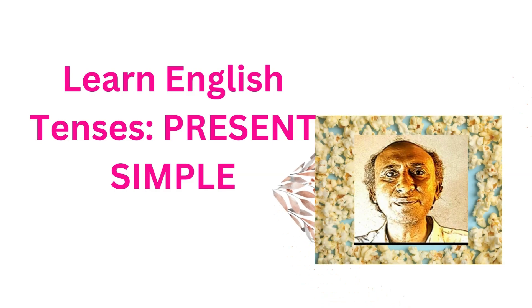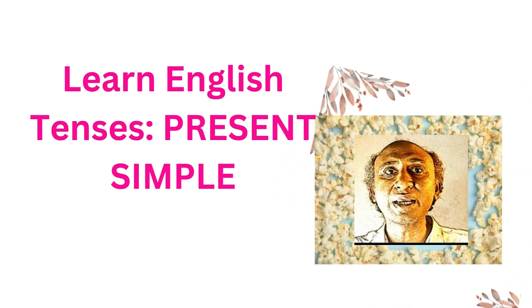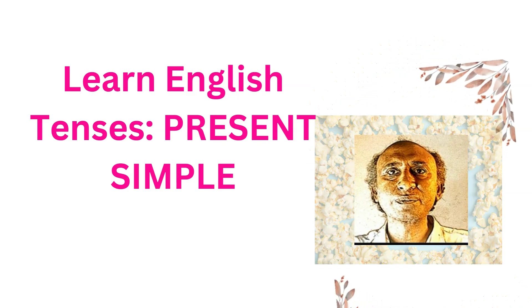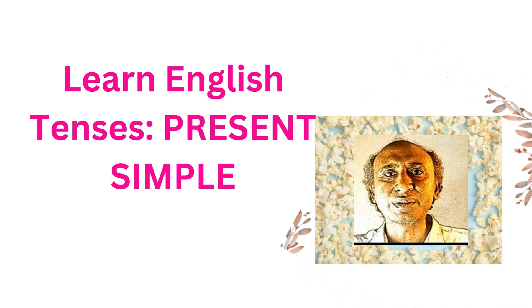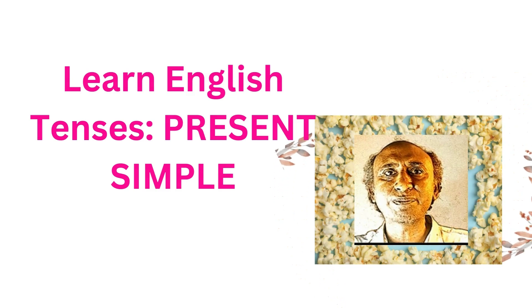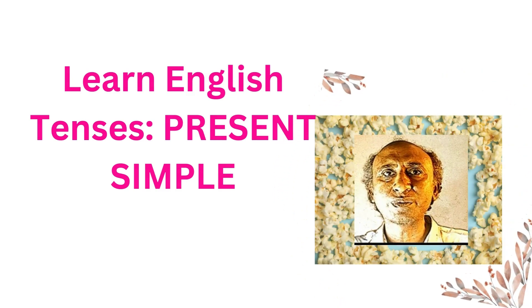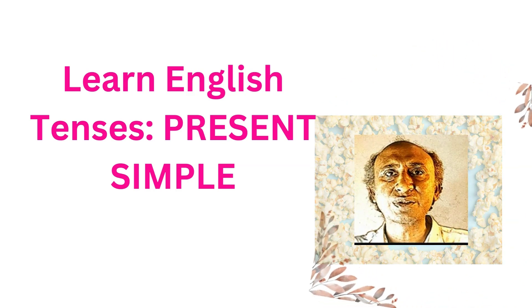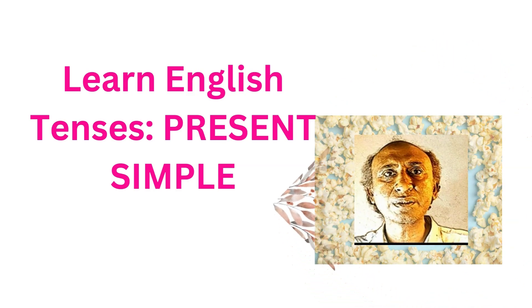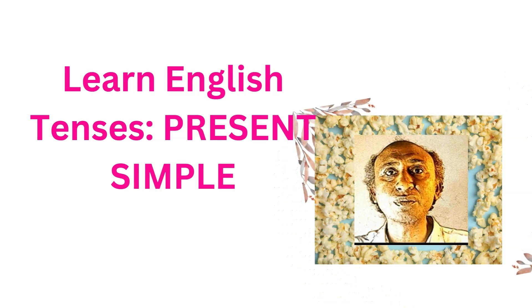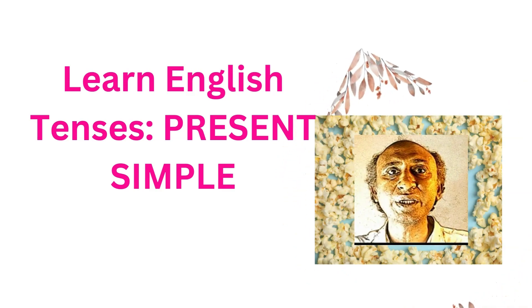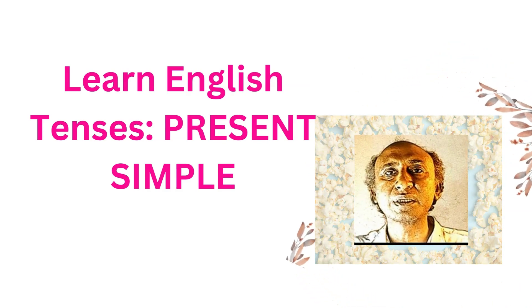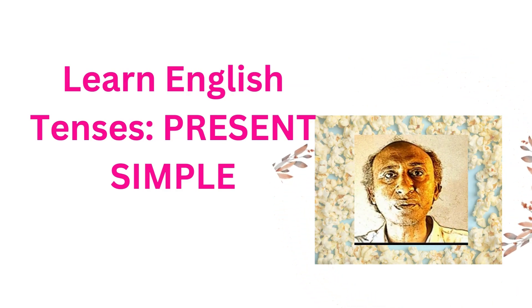This action becomes ingrained in a person's lifestyle and is performed almost automatically. A general truth is a statement that is universally accepted as being true or accurate, regardless of time, place, or circumstances. It expresses a fact or principle that applies broadly and is not limited to a specific situation or context. General truths are often based on scientific principles, natural laws, or common knowledge.